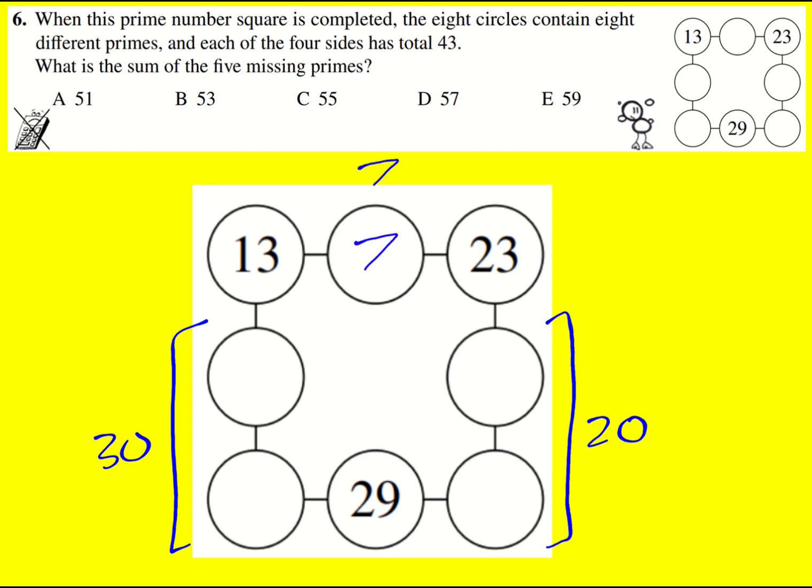Actually, 7 is going to have to go there. So I can just do 30 plus 20 plus 7, which is 57.